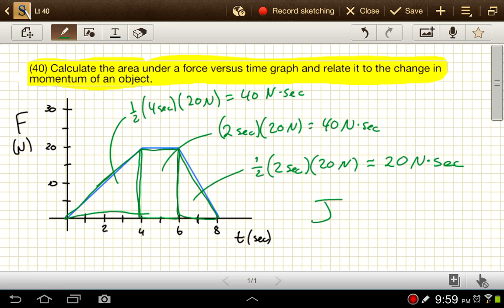So, my impulse then, j, is going to be 40 plus 40 plus 20 newton seconds, or j is equal to 100 newton seconds.